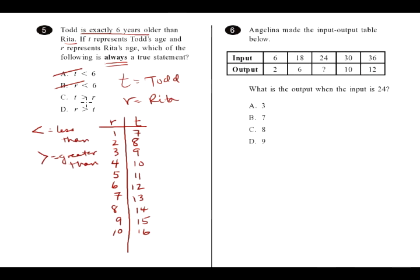T is greater than R. Todd is greater than Rita. Todd is older than Rita. Will that always be true? Look at this table. Yeah, that seems to always be true in this table. So, we'll mark that one as a possible.